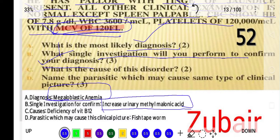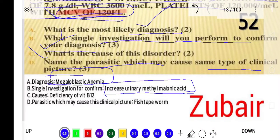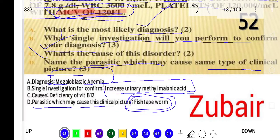There is also a parasite which may cause the same type of clinical picture — megaloblastic anemia. The parasite that causes this is the fish tapeworm. Fish tapeworm causes megaloblastic anemia, and to confirm this, urinary methylmalonic acid will be increased.